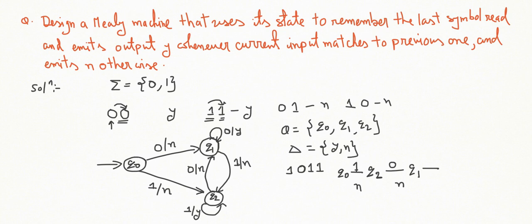Upon reading 1, it goes to Q2, output is N. Upon reading the last 1, it remains on Q2, output is Y.